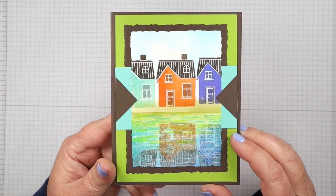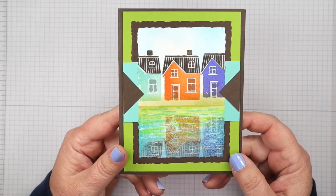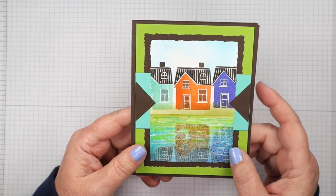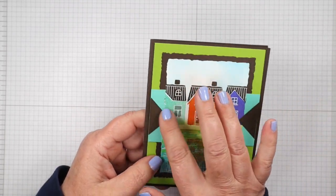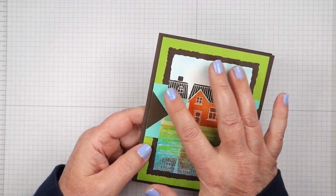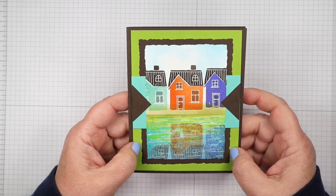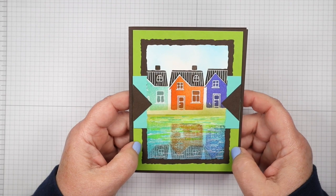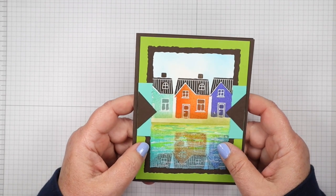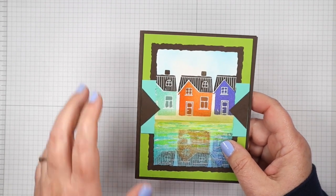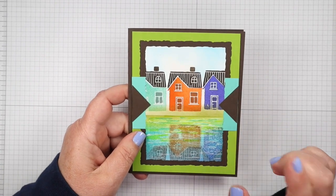For my panels today, I decided to use the deckled rectangle dies. That gives this great edge. We used to get this edge by ripping it, but it was always a crapshoot as to what the shape of your rectangle would come out like. It's very easy to use the deckled rectangle dies. That's just what we did.